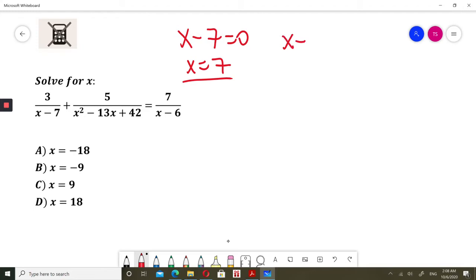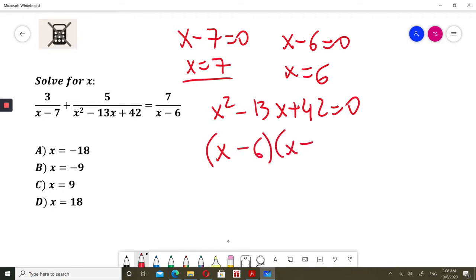Second, x minus 6 is 0 when x is 6. And x squared minus 13x plus 42 is 0. I multiply two numbers to get positive 42 and add two numbers to get negative 13. So those numbers will be negative 6 and negative 7, and that factorization will be true.